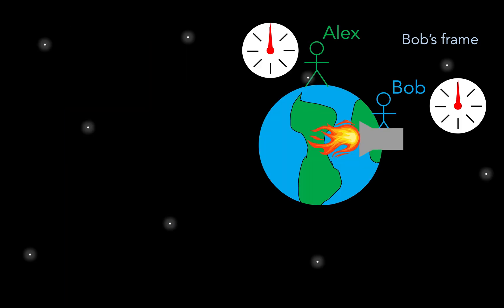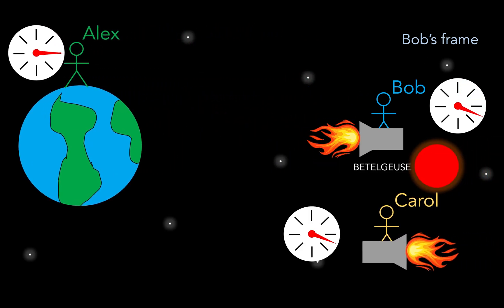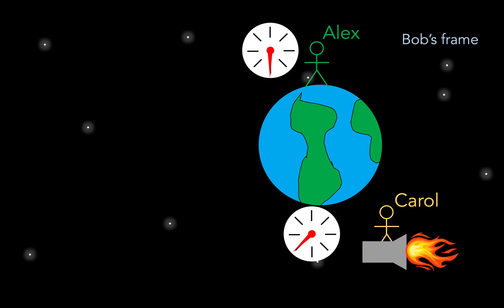Now in Bob's reference frame, the situation is the reverse. Alex's clock will have ticked less by the time Bob reaches Betelgeuse, and if we then switch seats to Carol's reference frame, Alex's clock will tick again by the same amount by the time Carol reaches Earth, since the speed of Alex relative to Carol is the same as the speed of Alex relative to Bob. So it seems that we've now reproduced the paradox again. Or have we?